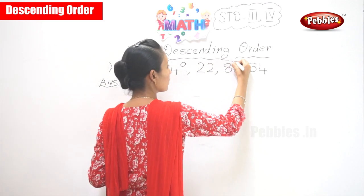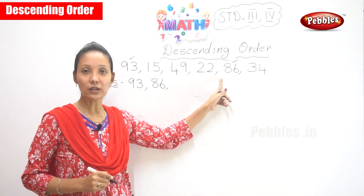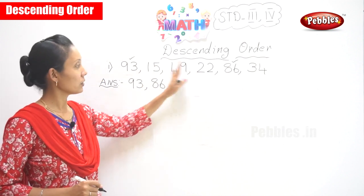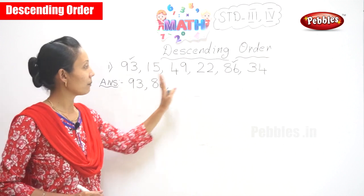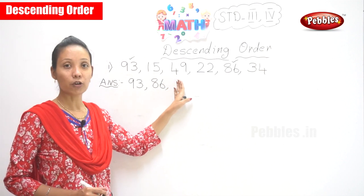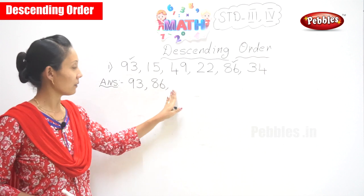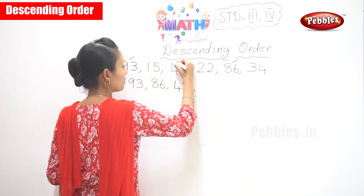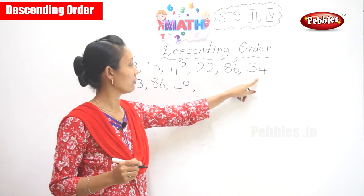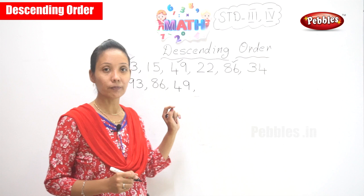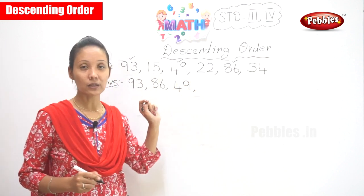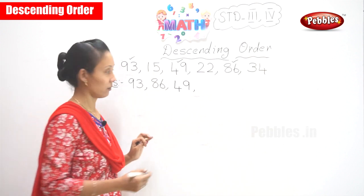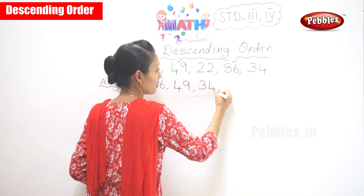So can we tick out 86? Okay. Now after 86, 8 is gone, 7 is not there, 6 is not there, 5 is not there. Do you have a number starting with 4? Yes, so here it is — 49. Can we tick out 49? Yes. Now you have only 3 numbers left. Which number starts with 3? So what is the number? Yes, it is 34. So can we tick out 34?